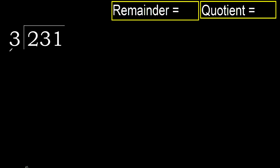231 divided by 3. 2 is less than 3, therefore move to the next digit. 23 is not less than 3, therefore we work with 23.